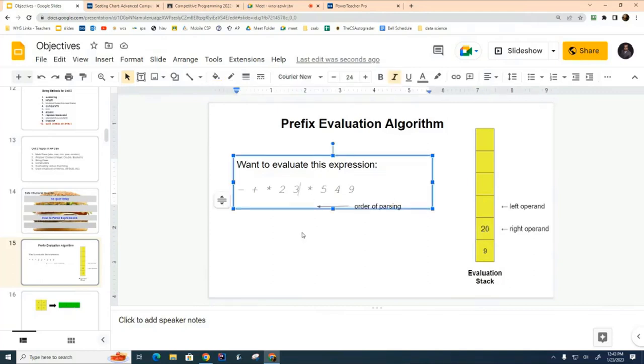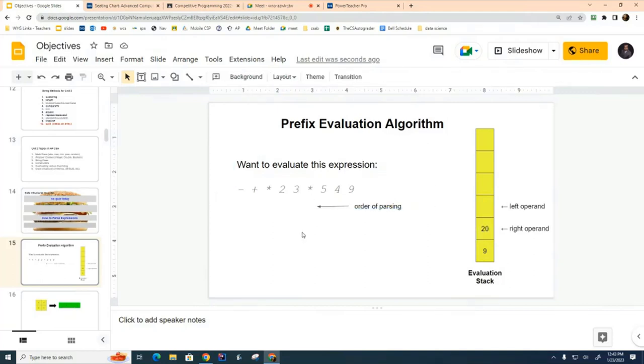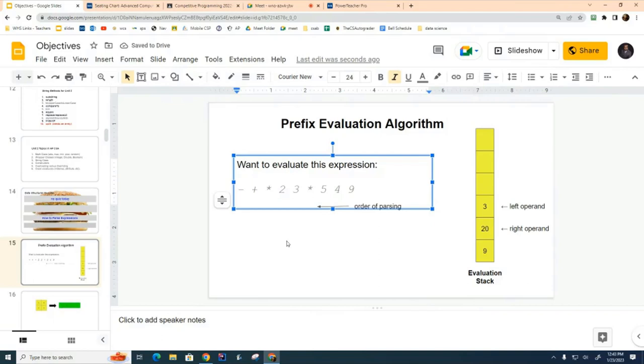We come over here with the three. What should we do with the three? We're going to push it onto the stack. Then we come to the two. What should we do with the two? Push it onto the stack. Then we come to the star. What should we do with the star? We're going to pop the two and the three, multiply those, get an answer of six, and push the six onto the stack.